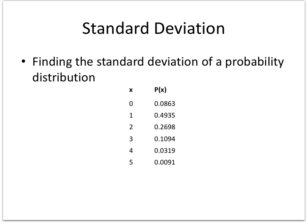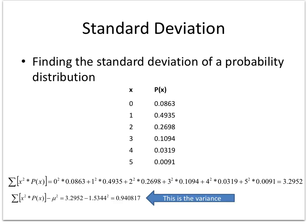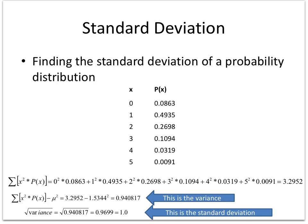If I want to find the standard deviation of a probability, well, the standard deviation, if I go through and I square this column, so each x term I square times the probability, I get this 3.295. If I want to know what the variance is, notice that I subtract each, this value that I just found from the mean that I found on the slide before.